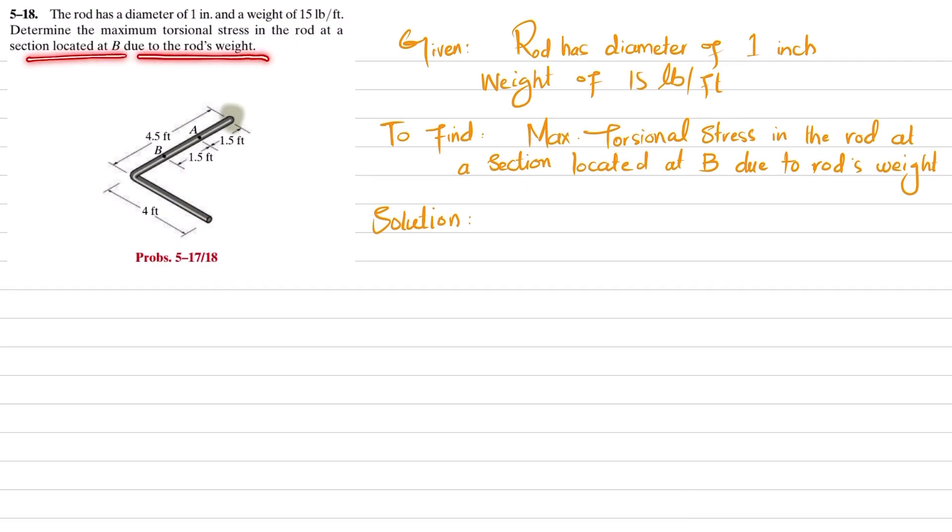Due to the rod's weight, you have to find the torsional stress τ_max at point B. So the rod has a diameter of 1 inch, weight of 15 pounds per foot, and we need to find the maximum torsional stress at B due to the rod's weight. Let's start with the solution.